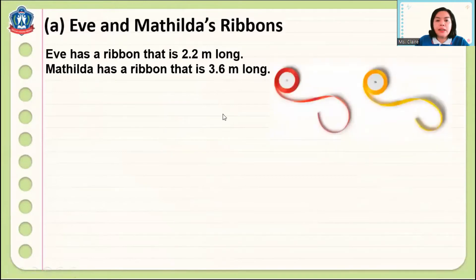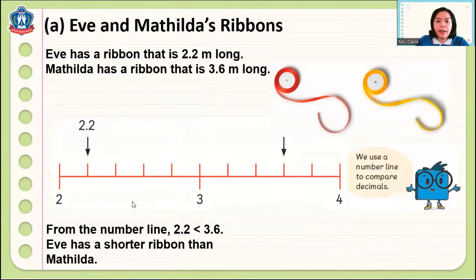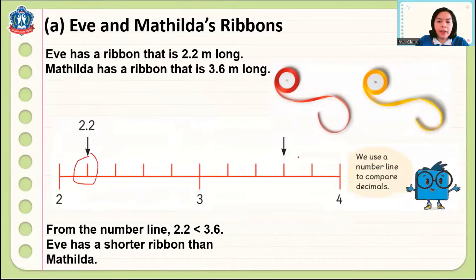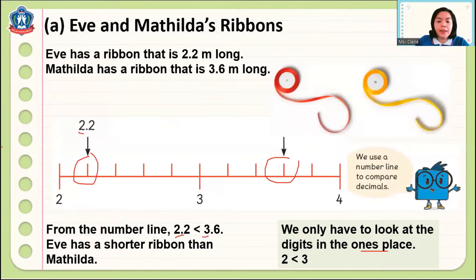Eve has a ribbon that is 2.2 meters long. Maselda has a ribbon that is 3.6 meters long. Which one has the longer or shorter ribbon? If we use a number line, 2.2 is around here and 3.6 is around here. We can see from the number line that 2.2 is less than 3.6, so Eve has a shorter ribbon than Maselda. When comparing decimals, we look first at the ones place — so 2 and 3: 2 is less than 3.